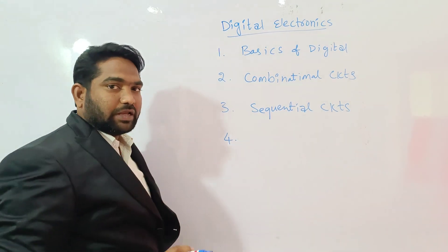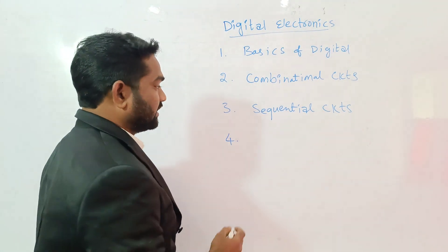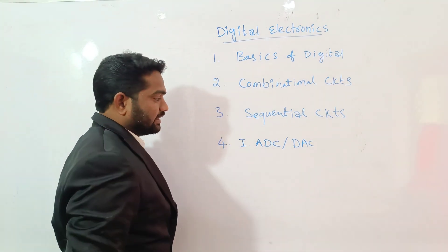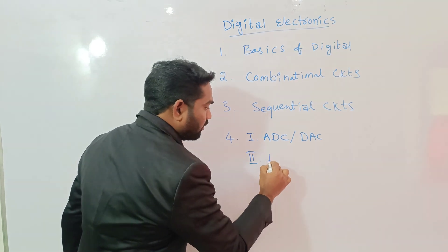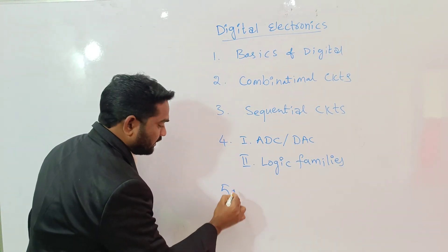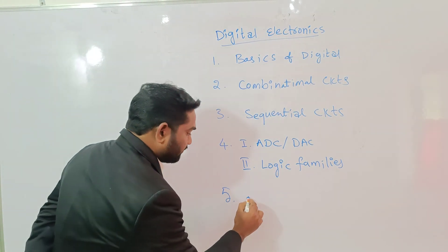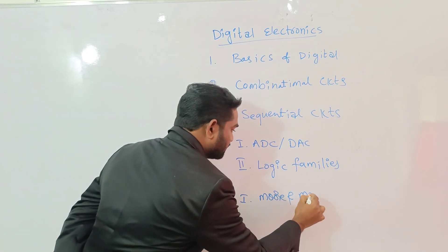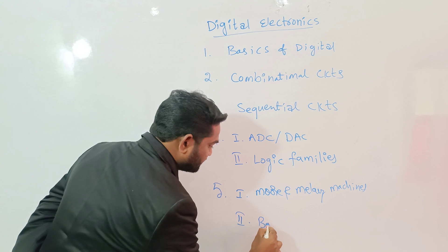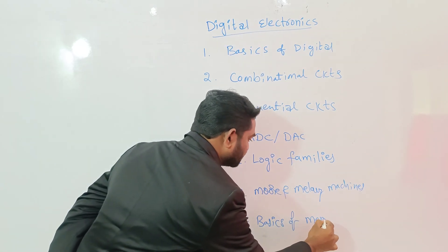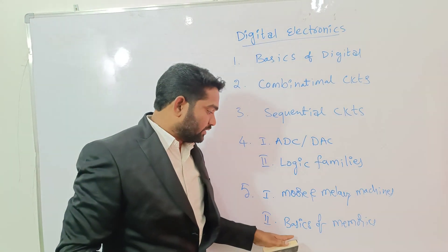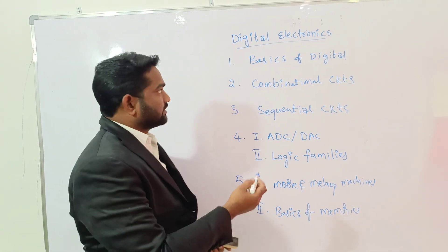The fourth unit we will divide into two parts for better understanding. The first part is ADC and DAC — analog to digital converter and digital to analog converter. The second part of the fourth unit is Logic Families. The fifth unit will also be covered in two parts: Moore and Mealy machines, and Basics of Memories. These are the five units of digital electronics.